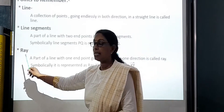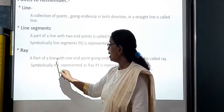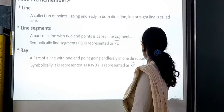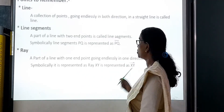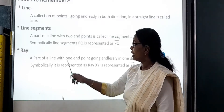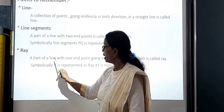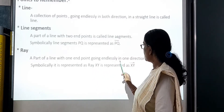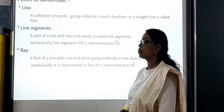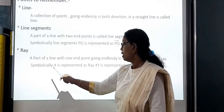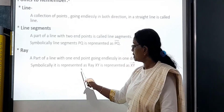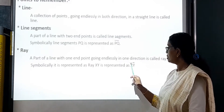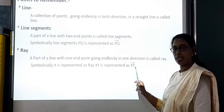And this is the ray. A part of a line with 1 end point going endlessly in one direction is called a ray. Symbolically, ray XY is represented as ray XY.